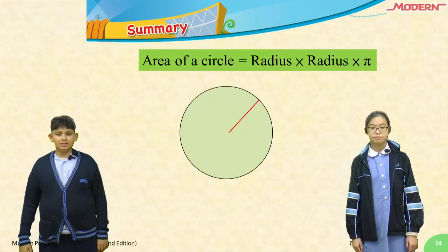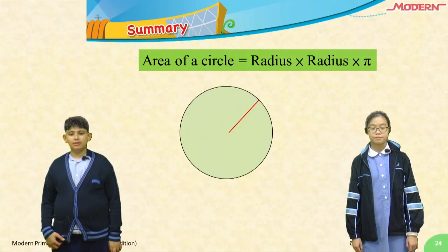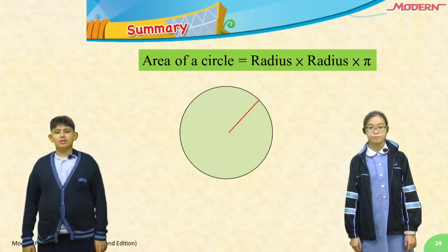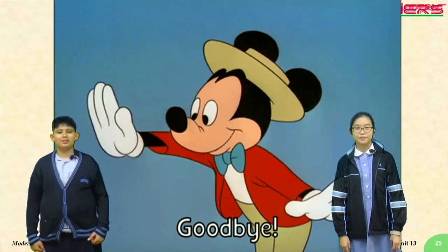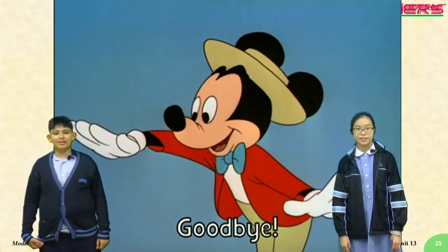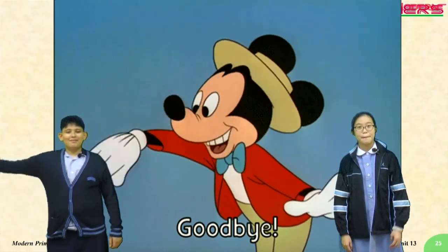Alright, let us draw a conclusion. The area of the circle equals the radius times radius times pi. This is the end of our campus TV. Thanks for watching. See you next time. Bye!